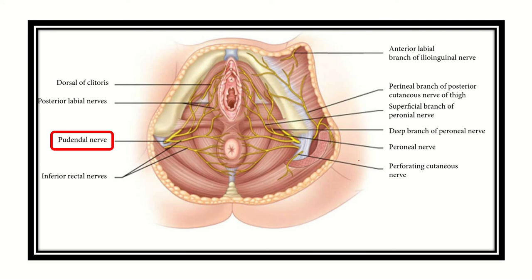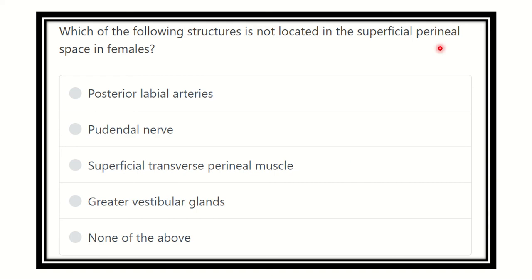Hello everyone, this is another lecture for MRC's exam. The question is: which of the following structures is NOT located in the superficial perineal space in the female? This is one of the important and direct questions about what is not present in the superficial perineal space in the female.